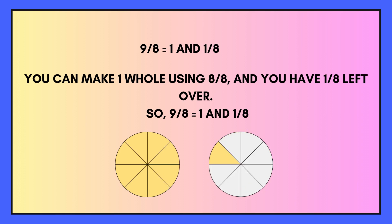9 eighths. To organise this into what we call a proper fraction, we know we can get 1 eight into 9, but we're left with 1 left over, and we're working in eighths. So we've got 1 whole and 1 eighth — the answer is 1 and 1 eighth.